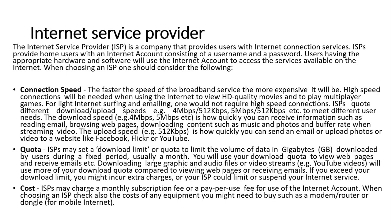When choosing an internet service provider, number one, consider the speed — how much bandwidth do they offer? Some offer a maximum of 100 megabits per second, some up to a gigabit per second. You need to verify through customer reviews. A genuine ISP should provide reviews from their customers so you can see whether the speeds advertised match actual performance.